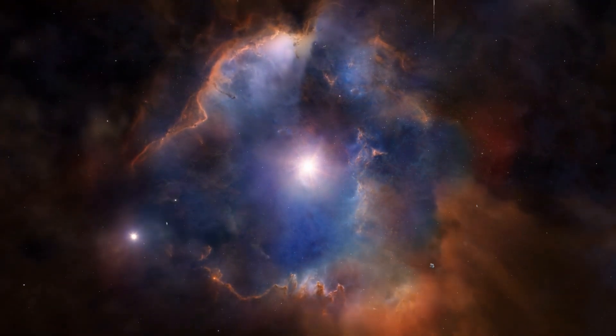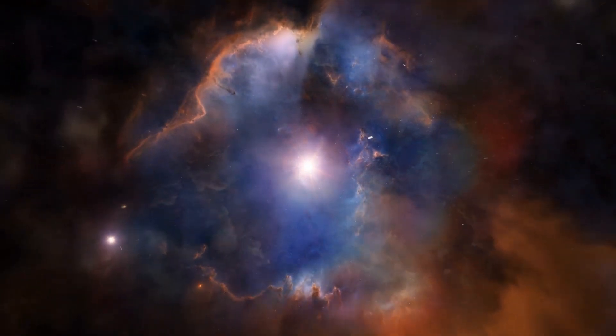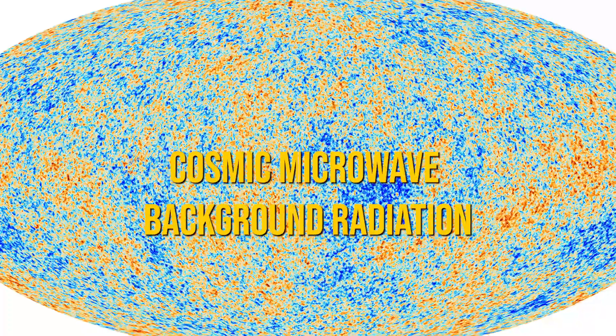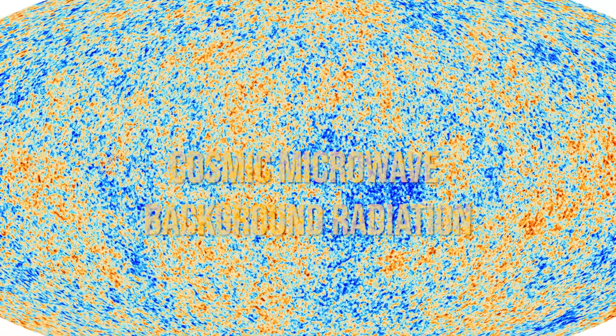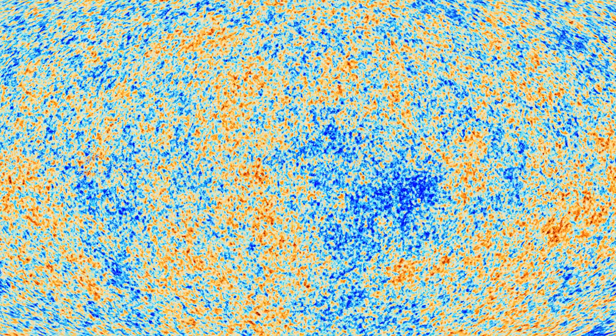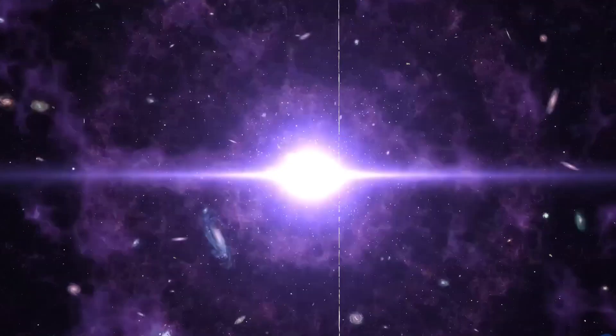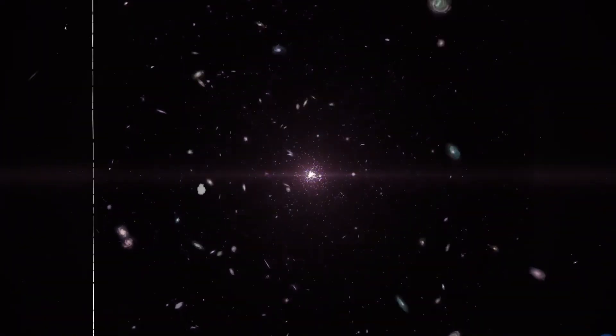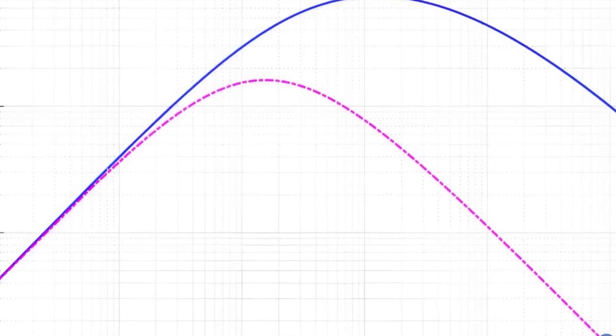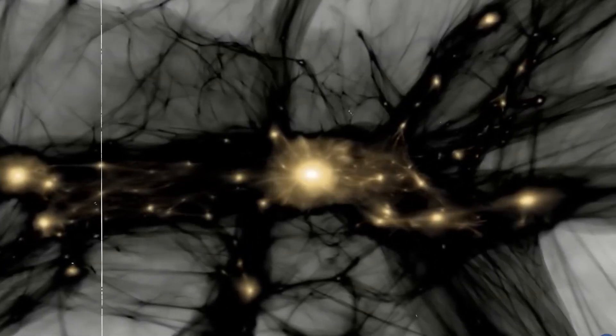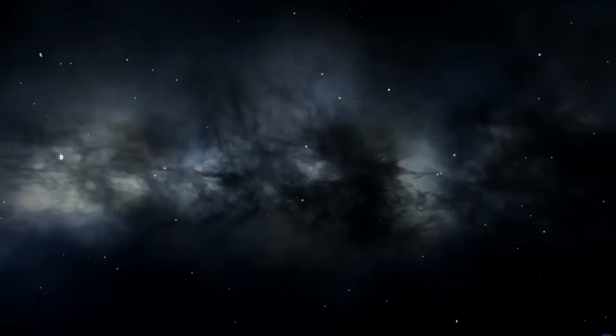For example, it gives us a new way to understand things like the cosmic microwave background radiation, which is like an echo of the Big Bang, and how galaxies are spread out in the universe. Gupta's model explains all this without needing dark matter's gravity, shaking up the traditional cosmic equation.